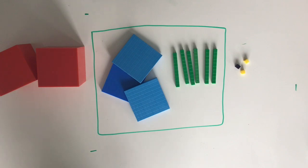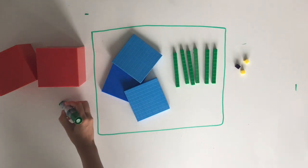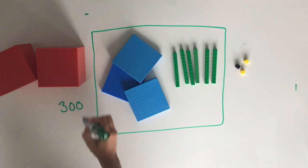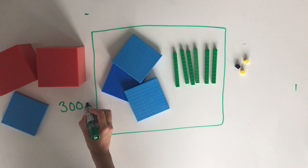When we're rounding to the nearest hundred, it's important that we know how many hundreds we have and what the next group of 100 will be. We have three hundreds for a value of 300. Our next group of 100 will be 400.